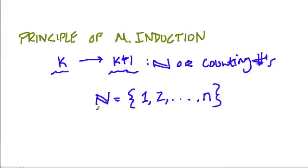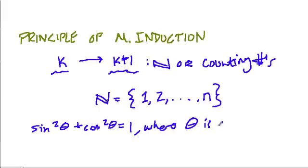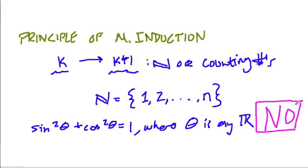So they give us a bunch of choices and they say, well, does sine squared theta plus cosine squared theta equal 1, where theta is any real number? In other words, could you prove this for any real number using induction? Well, even if I didn't understand what this meant, even if I had no idea what this was about, I could say no, because induction is only dealing with natural or counting numbers.